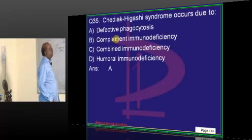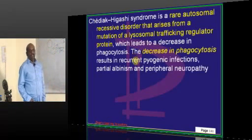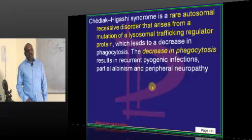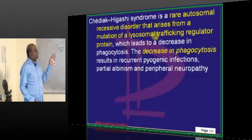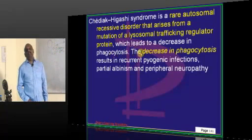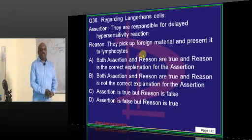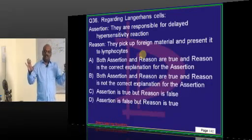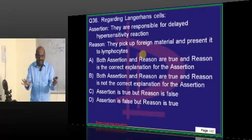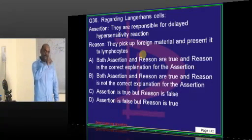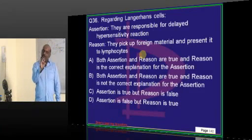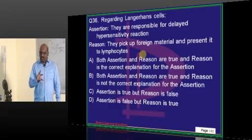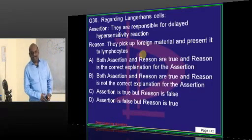Chediak-Higashi syndrome is because of defective phagocytosis. It is an autosomal recessive disorder where phagocytosis is deficient, and there is a problem in the lysosomal trafficking regulator protein. For the 6 to 7 primary immunodeficiencies — Chediak-Higashi, Job syndrome, IgA deficiency, common variable immunodeficiency, Wiskott-Aldrich — one question will come in every entrance. You have to read 4 or 5 points about each of them.